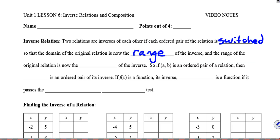And the range of the original relation is now the domain of the inverse. So if there's a point (A, B) in the original relation, the inverse relation will have the point (B, A). That defines what it means to be an inverse as far as what we're going to do in this lesson.